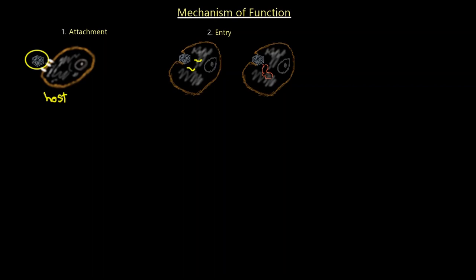The lytic cycle is a general mechanism of viral infection and lysis, but not all viruses function this way. Bacteriophages — which specifically infect bacteria — have two types of mechanism: the lytic cycle shown previously, and the lysogenic cycle.